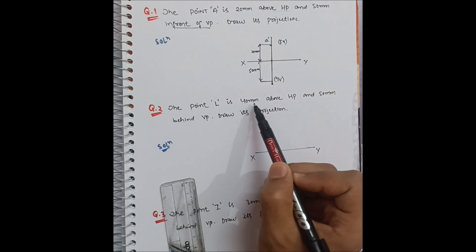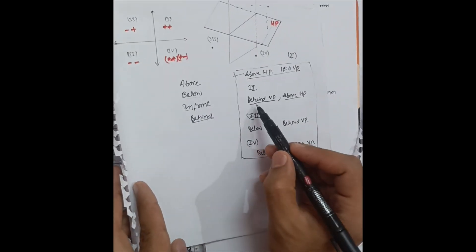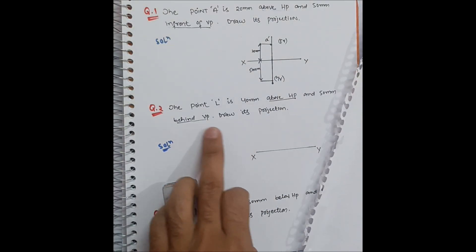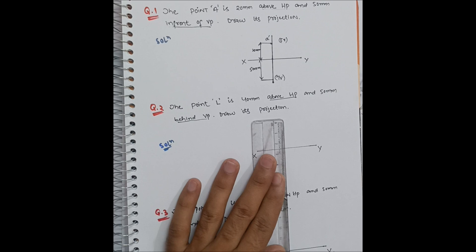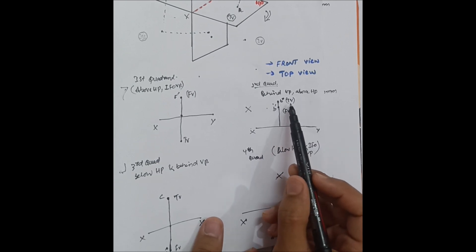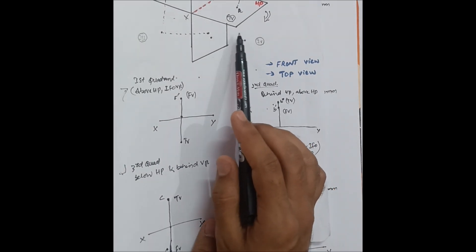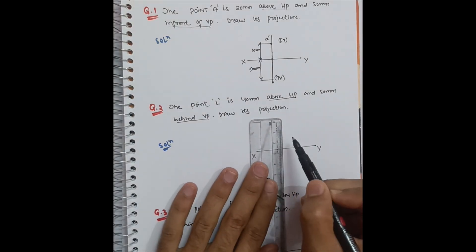Point L is 40mm above HP and 50mm behind VP. The key terms here are 'above HP' and 'behind VP'. Recall the previous lecture — behind VP and above HP places the point in the second quadrant. In the second quadrant, both the front view and the top view are on the upper side of the reference line XY, as I discussed when explaining how the horizontal plane rotates.